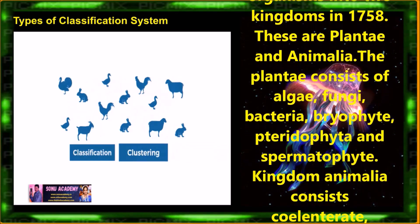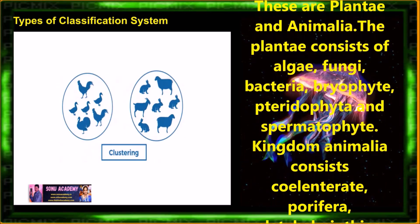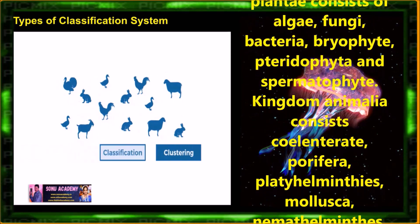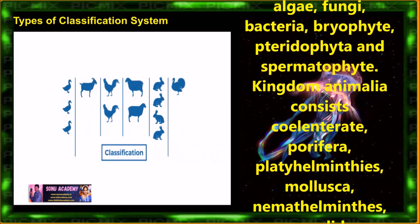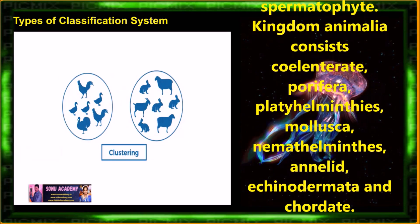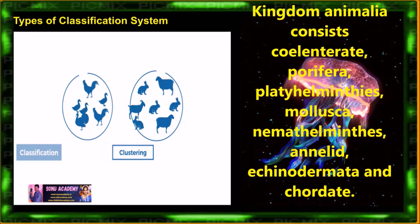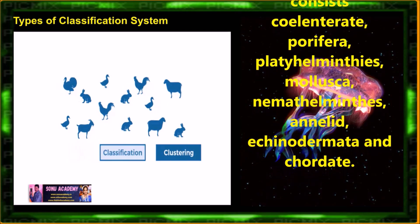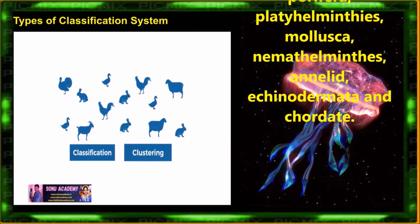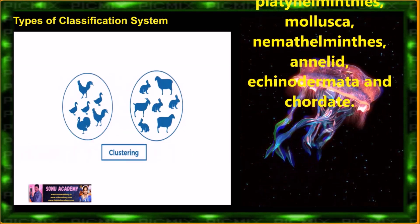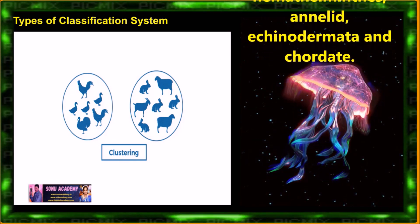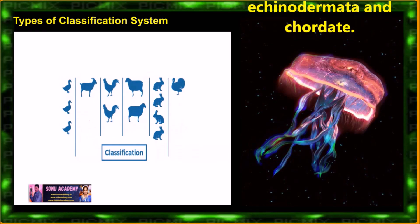Now let us see which organisms come under Plantae. Plantae consists of algae, fungi, bacteria, bryophyta, pteridophyta, and spermatophyta. Under Animalia: coelenterata, porifera, platyhelminthes, mollusca, nematohelminthes, annelida, echinodermata, and chordata.